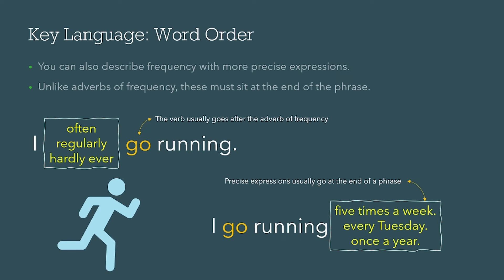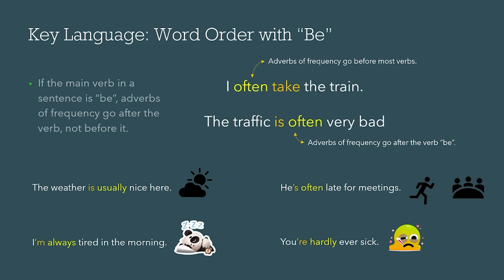But if you want to be more specific or precise about what you are saying or writing about, the precise expression goes at the end of the sentence. For example: 'I go running five times a week,' or 'every Tuesday,' or 'once a year,' or 'maybe never.' These precise expressions — five times a week, every Tuesday, and once a year — usually go at the end of the phrase.